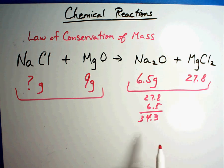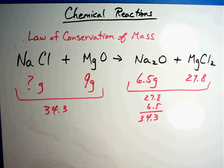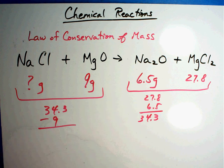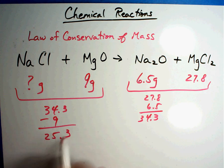34.3. That means this has to be 34.3 also. Now, one of the cool things about the TAKS test is they allow you to use a calculator, so I'm going to use my calculator to get the answer. So how am I going to do that? Well, 34.3 minus 9 equals 25.3 - that's my answer.